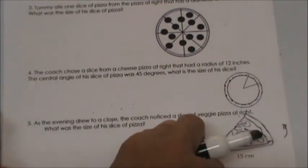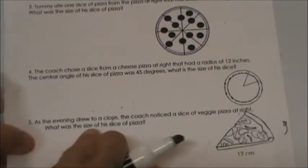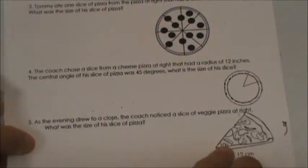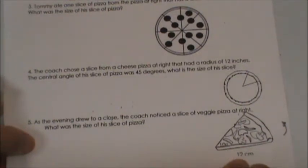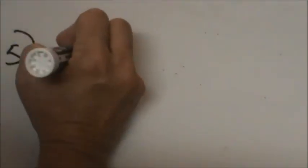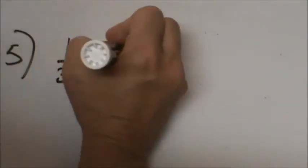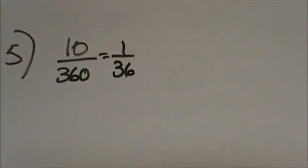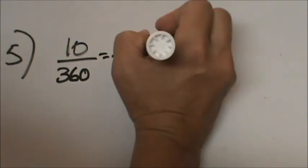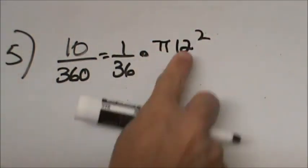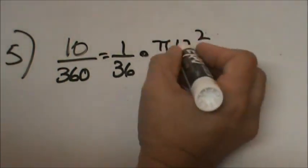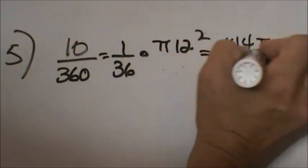The last one: the coach noticed a slice of veggie pizza with a 10 degree angle and a radius of 12 centimeters. We have 10 over 360 — a very small slice — times pi times 12 squared, which is 144 pi. So that gives us 144 pi over 360.